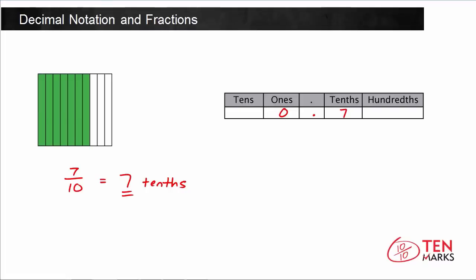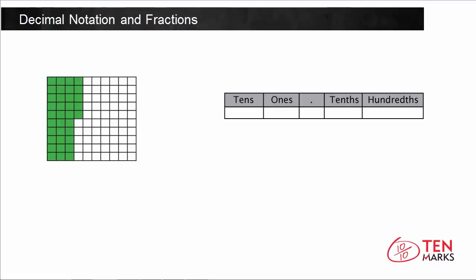Now let's work with hundredths. In this hundredths grid, there are 100 equal parts, so we know the denominator is going to be out of 100. If you count all the green squares in this model, you'll find that there are 35 of them filled in. So the fraction shown here is 35 hundredths.